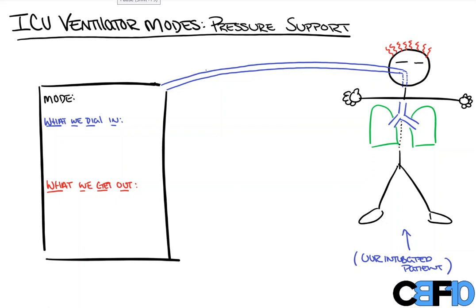Hi everyone. In this quick video from Count Backwards from 10, we're going to take a look at pressure support, our ICU ventilator mode. This is going to be the quickest of our ventilator modes because it's really the simplest and there isn't too much going on here, so I promise I'm going to make this video quick. Before we get started, if you like the video, hit the like button, subscribe, pass it on to somebody else you think it might help.